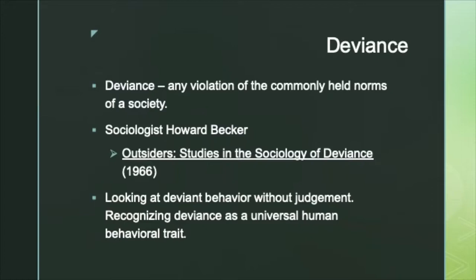Sociologist Howard Becker, writing in the 1960s, addressed this concept of deviance. He recognized that deviance, in terms of being an act, is not only the act of violating a norm, but it is also the corresponding reaction to that deviant action. So there is both a cause and effect in terms of how sociologists are looking at deviance and deviant behavior.